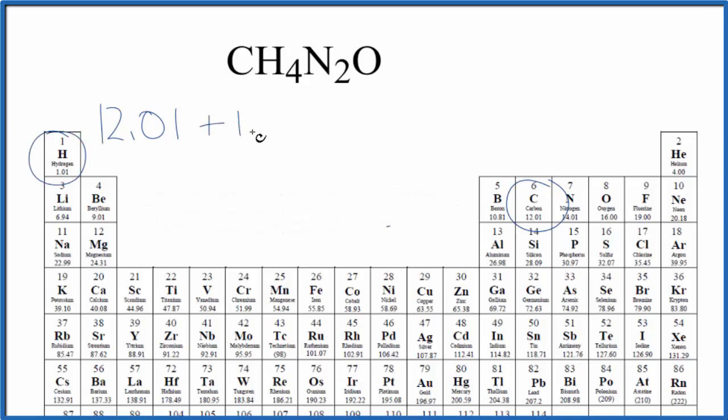Hydrogen is 1.01 grams per mole. We have four of these hydrogen atoms. Let's multiply that by 4, plus nitrogen.